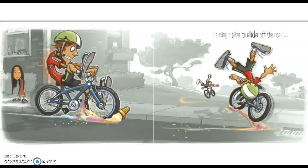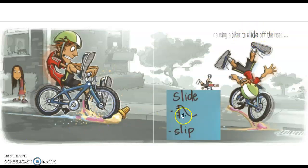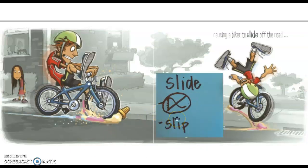Let's continue this work on another page in the book: 'Causing a biker to slide off the road.' That word slide tricked me a little bit. I know that a slide can be like on the playground, and I also know that the word slide can mean to slip. So now I need to reread and think — what does it mean in this part of the book? I might want to check the picture and the words to see which one would make sense. 'Causing a biker to slide off the road.' They certainly are not talking about a playground slide. Instead, they're talking about how this biker slid off the road because of the ice cream cone.